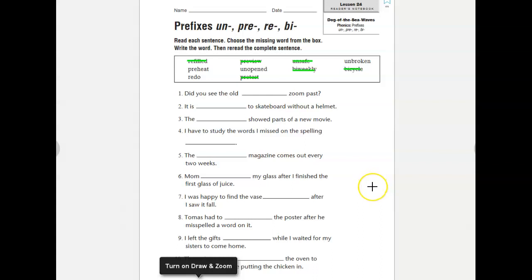Number seven, I was happy to find the vase unbroken after I saw it fall. That's always a good thing not to have a broken vase. Number eight, Tomas had to blank the poster after he misspelled a word on it. Sounds like Tomas had to redo the poster.